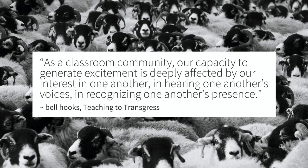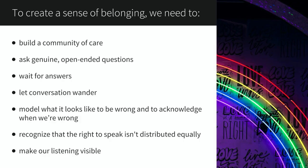Bell Hooks writes in Teaching to Transgress: 'As a classroom community, our capacity to generate excitement is deeply affected by our interest in one another, in hearing one another's voices, in recognizing one another's presence.' In short, to create a sense of belonging we need to build a community of care — ask genuine open-ended questions, wait for answers, let conversation wander, model what it looks like to be wrong and to acknowledge when we're wrong, recognize that the right to speak isn't distributed equally, and make our listening visible.